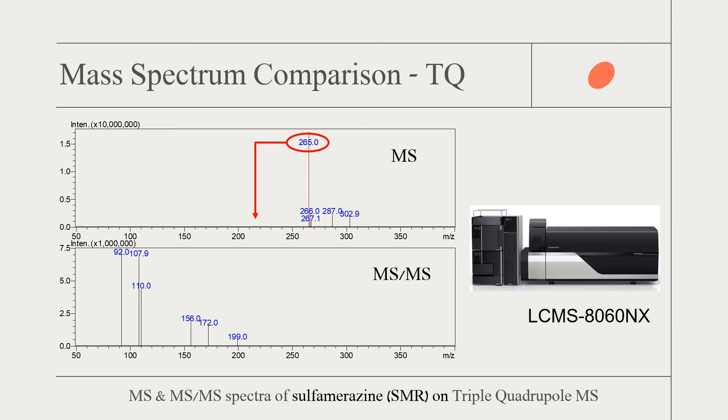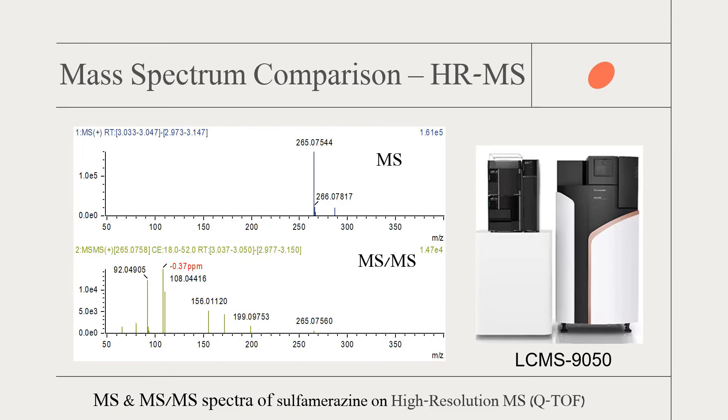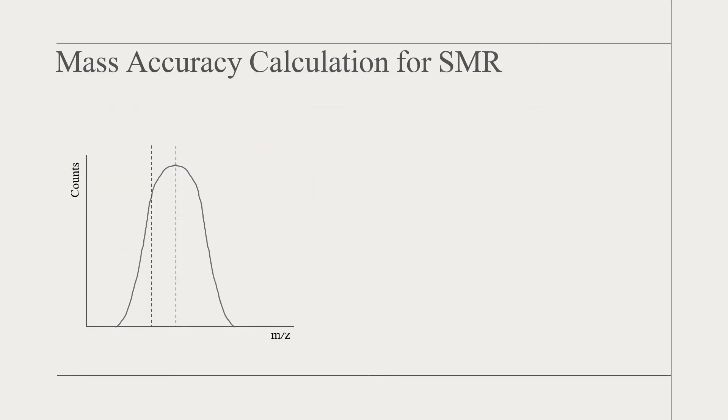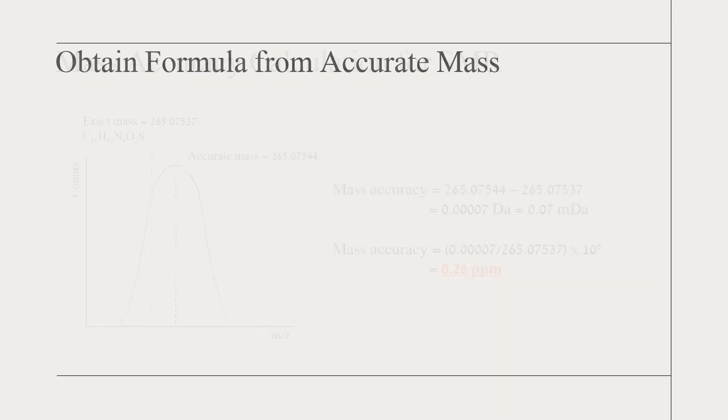If we analyze the same compound on LC-QTOF, what additional information can we obtain? We can obtain both MS and MS/MS spectra too. However, both spectra are high resolution accurate mass spectra. It means that the m/z values obtained are more accurate, likely to four decimal points. The mass accuracy or measurement error for the measured m/z 265.07544 is calculated to be 0.07 millidalton or +0.26 ppm.